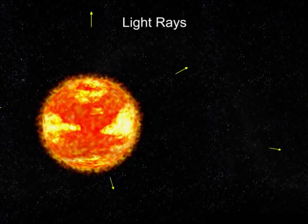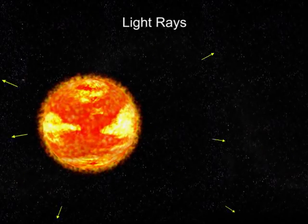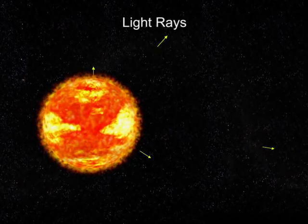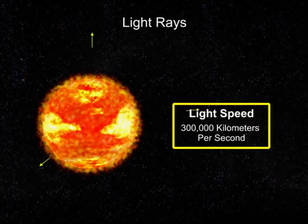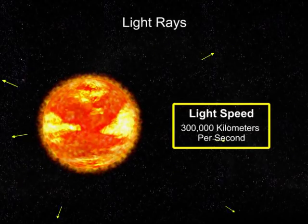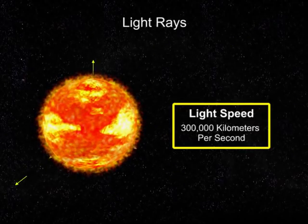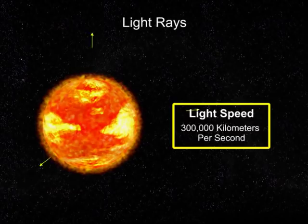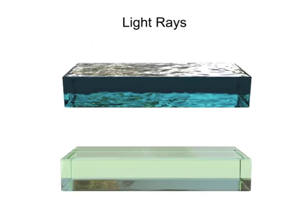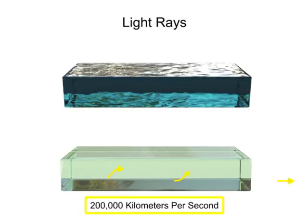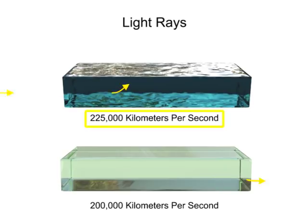Light rays travel through space in a straight line at approximately 300,000 kilometers per second. As light passes through a transparent medium, such as water or glass, its speed is decreased. For glass, it's reduced to 200,000 kilometers per second, and for water, the speed is 225,000 kilometers per second.